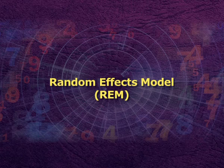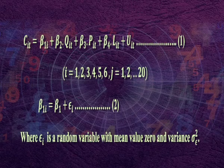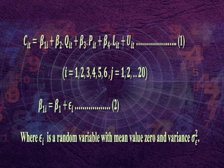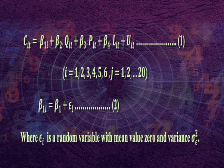Now let us understand the random effect model, known as REM. Starting with the fixed effect model equation: C_it = β₁ᵢ + β₂Q_it + β₃P_it + β₄L_it + U_it — equation 1, where i = 1 to 6 and t = 1 to 20. Now we assume that β₁ᵢ is not fixed, but is a random variable with mean value β₁. Thus the intercept for an individual company is expressed as β₁ᵢ = β₁ + εᵢ — equation 2, where εᵢ is a random variable with mean 0 and variance σ²_ε.